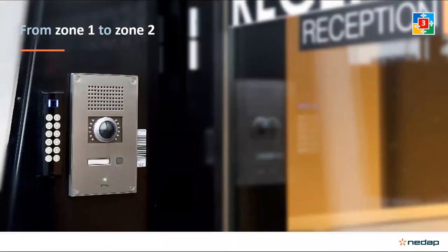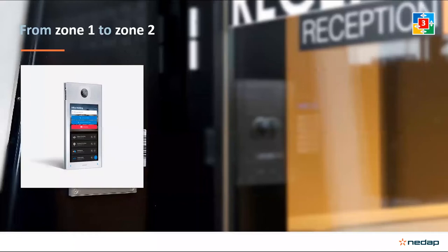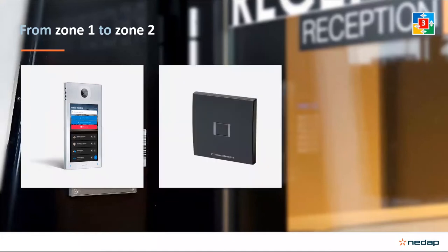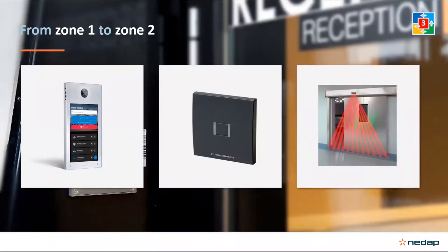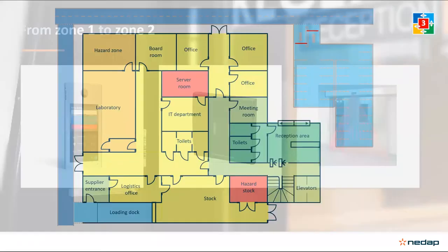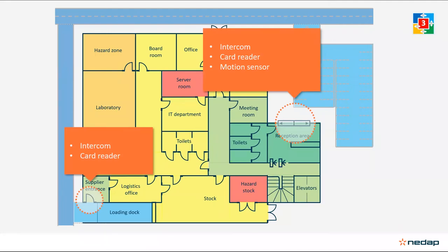For the transition from zone 1 to zone 2 — from the car park (external private space) to internal public space — at the front door and supplier entrance, we can use an intercom for visitors and suppliers, and a card reader for employees. If the front door is an electrical sliding door, we can also use a door sensor to enter the building. The door sensor is disabled after business hours or on holidays when the building is not in use. A good access control system can use security levels or time schedules to automatically regulate the functioning of the door sensor.